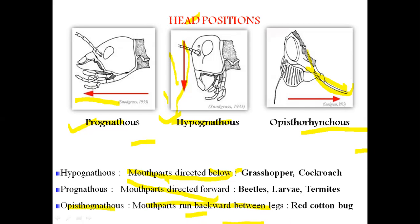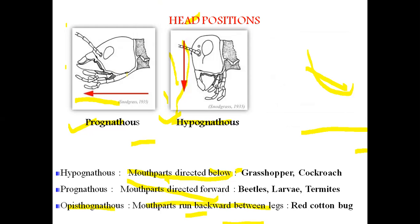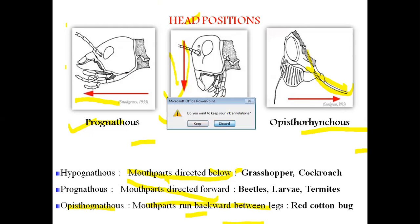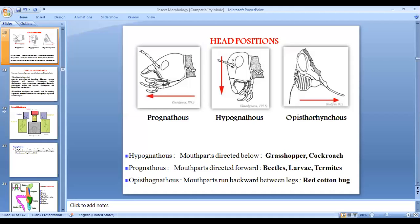This is the overall structure of the insect head. Today we learned about the different sclerites of the head, the sutures of the head, and the three head positions. Thank you very much.